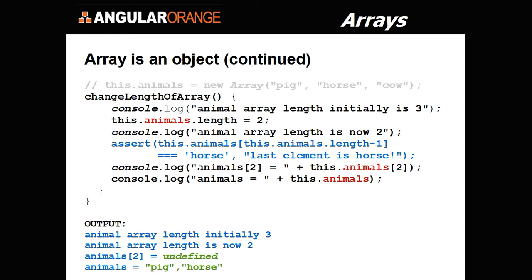Now let's look at the change length of array function and some more object attributes of the array object. The animal array length is initially three — index zero, one, and two — but the length is three. Then I set the animal length equal to two. Now I have pig and horse in my array; cow is gone. I log 'animal array length is now two' and assert that the last element in the animals array is now horse, which passes fine.